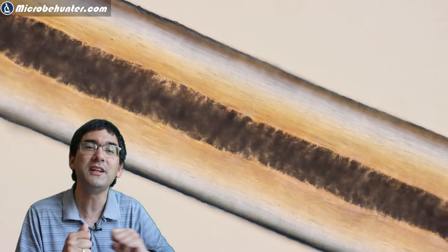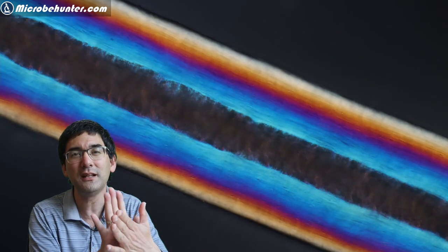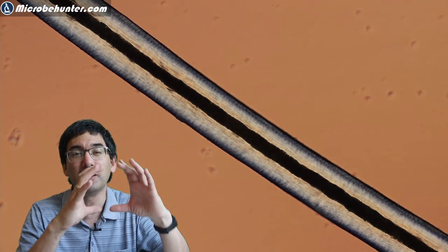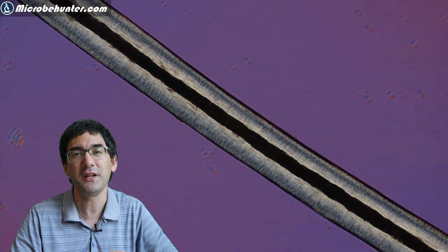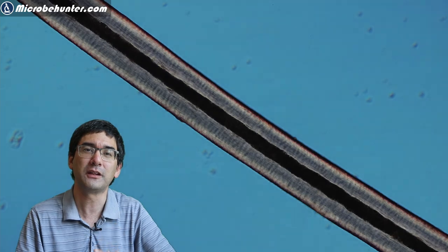If you watched one of my previous videos where I put some beard clippings under the microscope, you can actually see in the cross section there are different regions of the hair. In the cross section, you can see the central part also being of a different color.